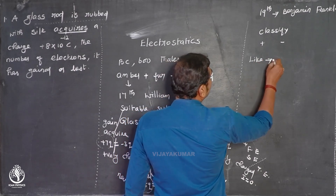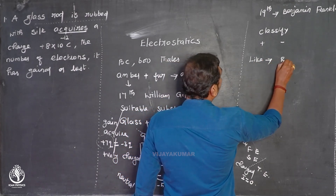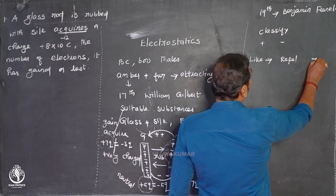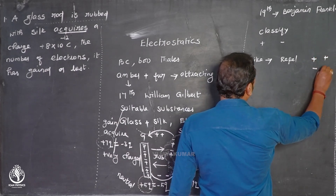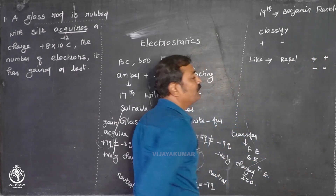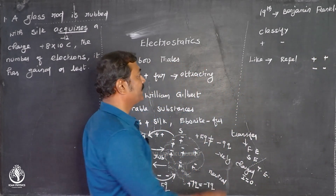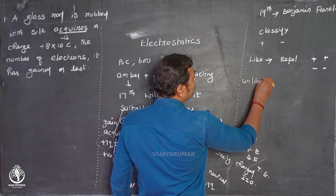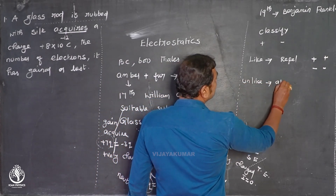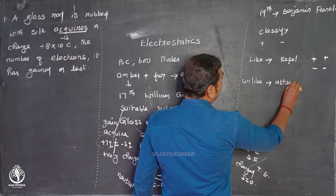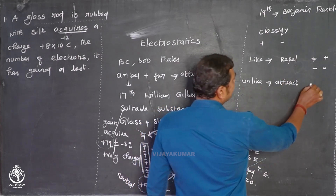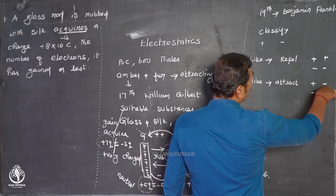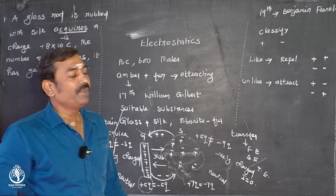Like charges always repel each other — positive-positive or negative-negative always repel. Unlike charges always attract each other — positive-negative or negative-positive always attract.